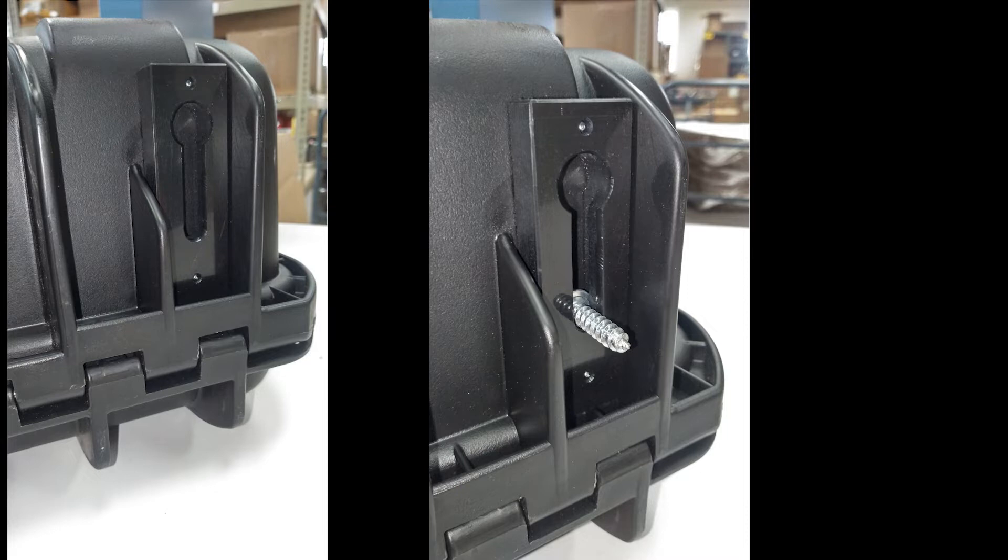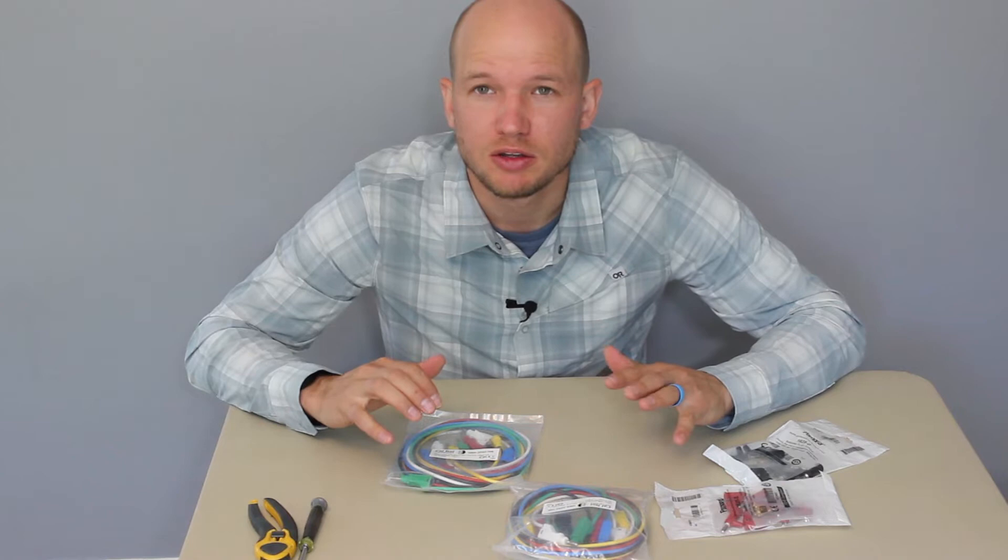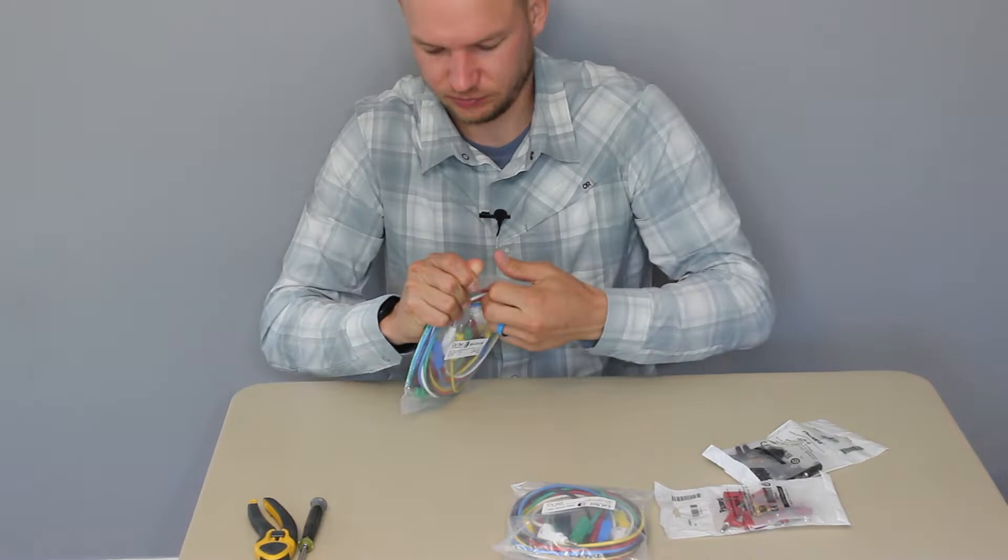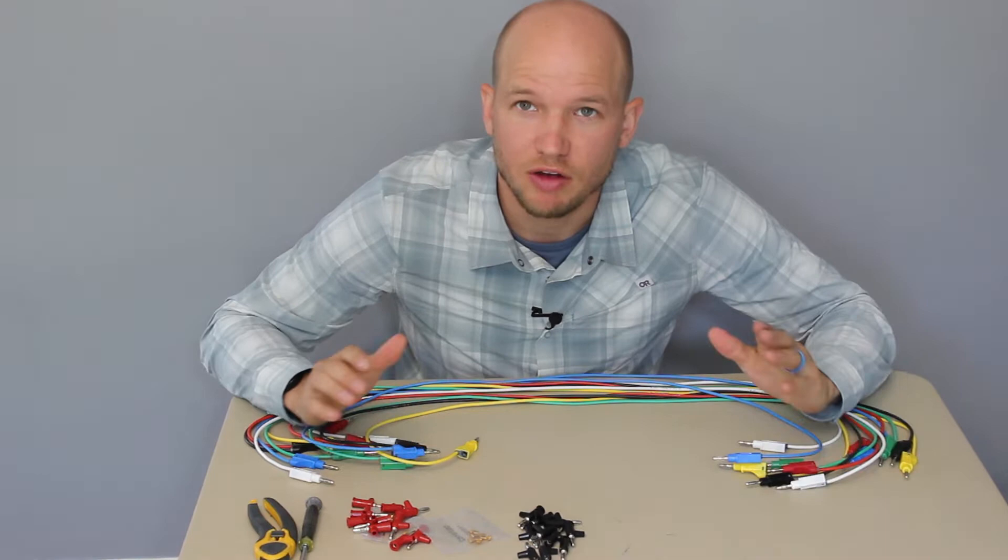The last item in the box is these two little brackets. These brackets are to help mount the unit. So I'll show you a picture of that here. To begin with the wiring unit, the first thing we're going to do is open these plug leads and the extra banana plug ends.